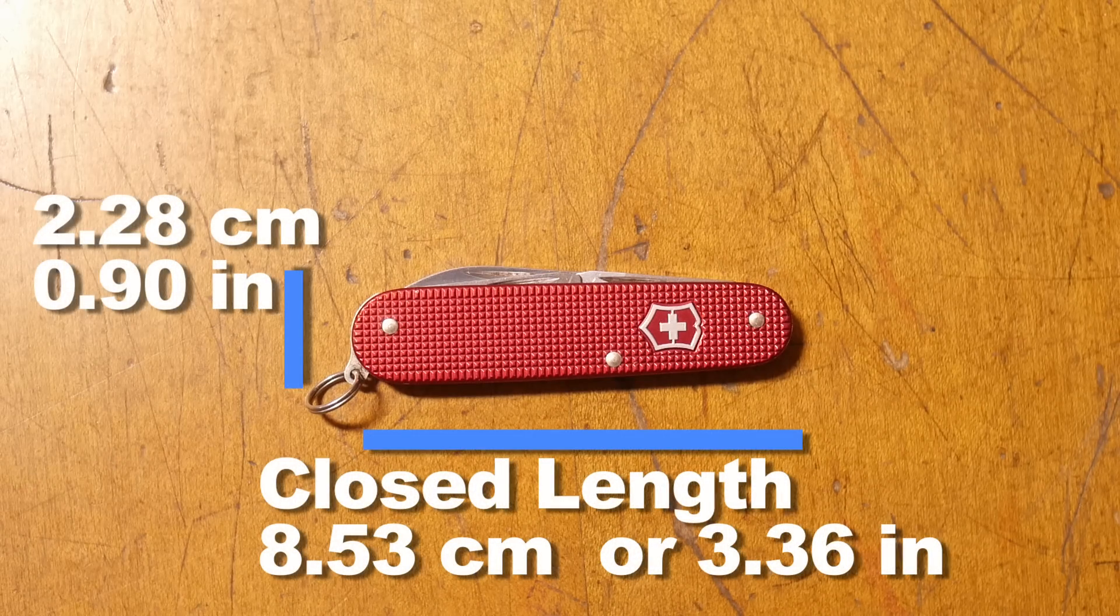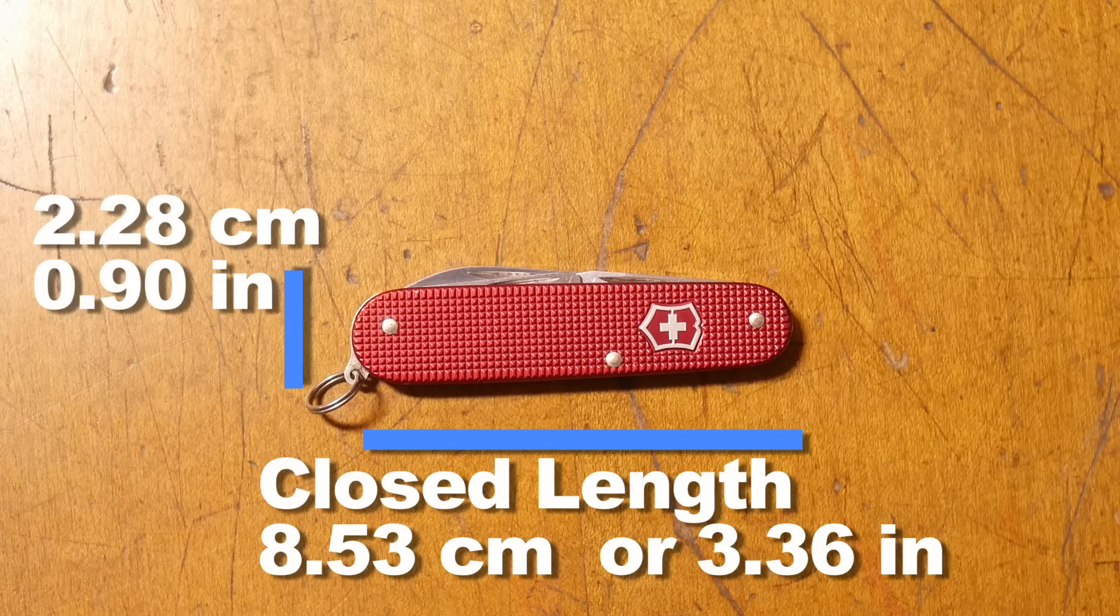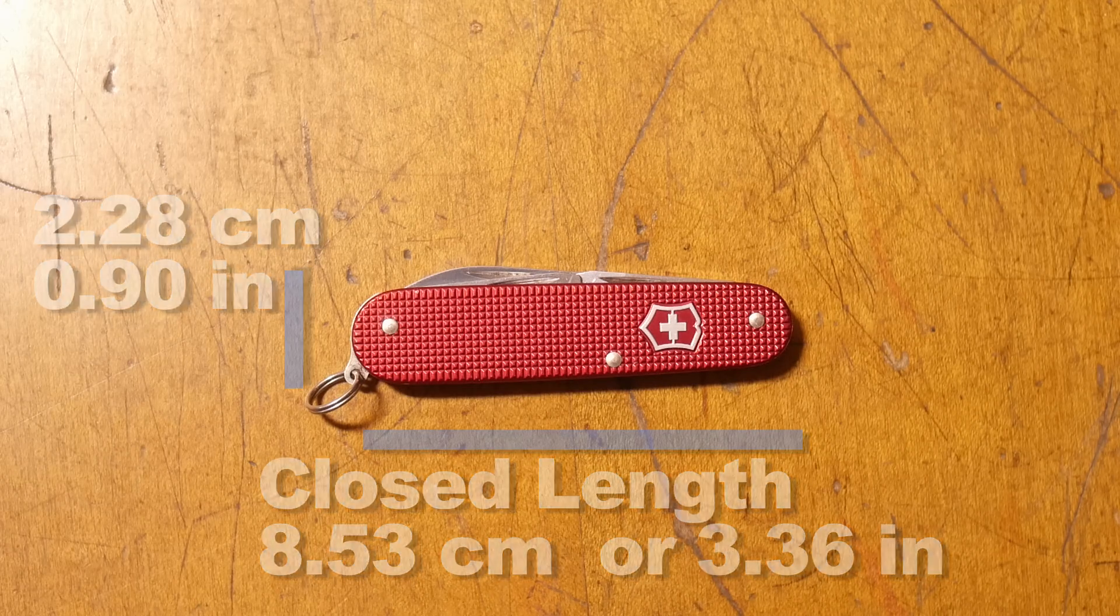And while we're at it why don't we look at the closed length. Yeah how about that and the tallness of it. This would of course be Victorinox's 84mm size knife.